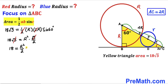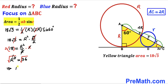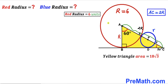Multiplying both sides by 2 to remove the fraction, we get R² = 36. Taking the square root of both sides, the square and square root undo each other, so uppercase R turns out to be 6 units. The radius of the red circle is 6 units.